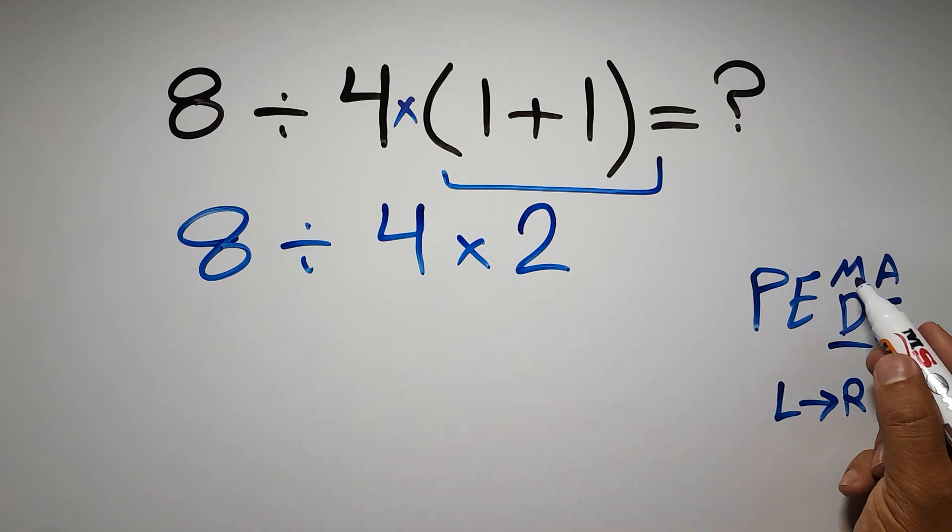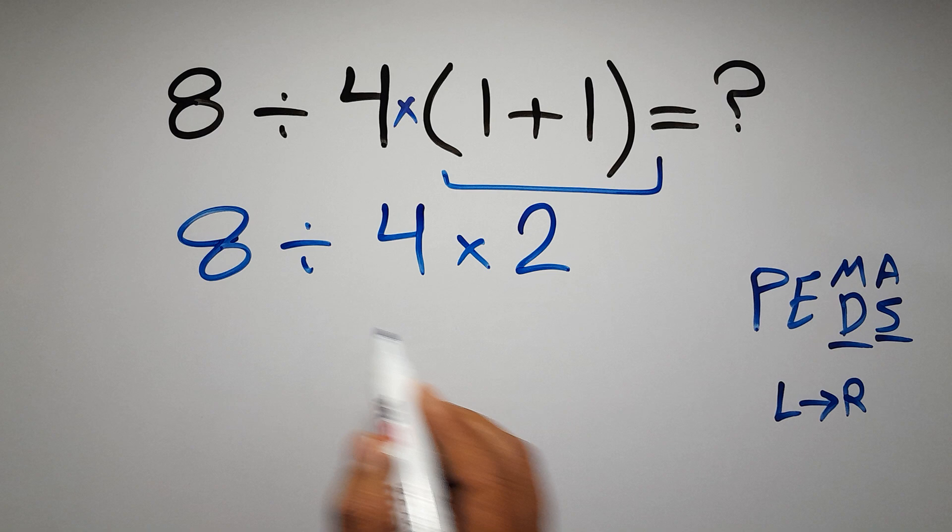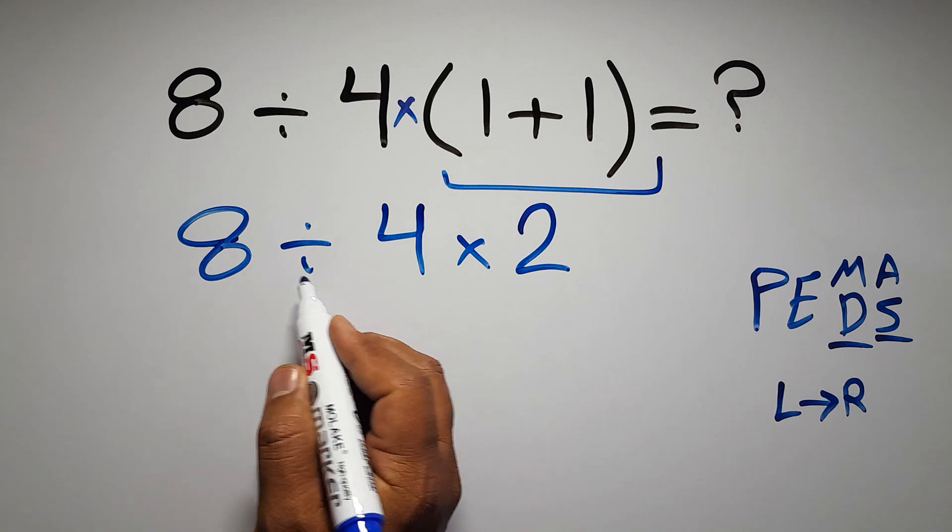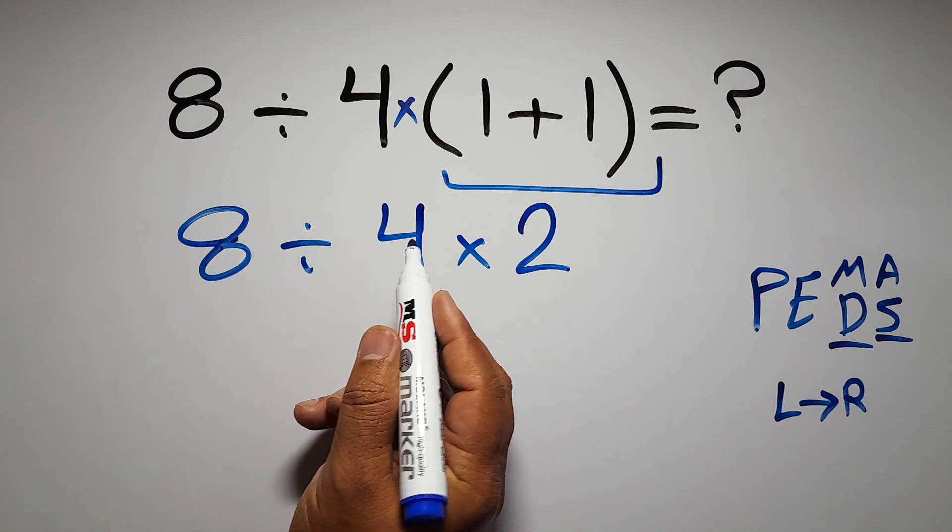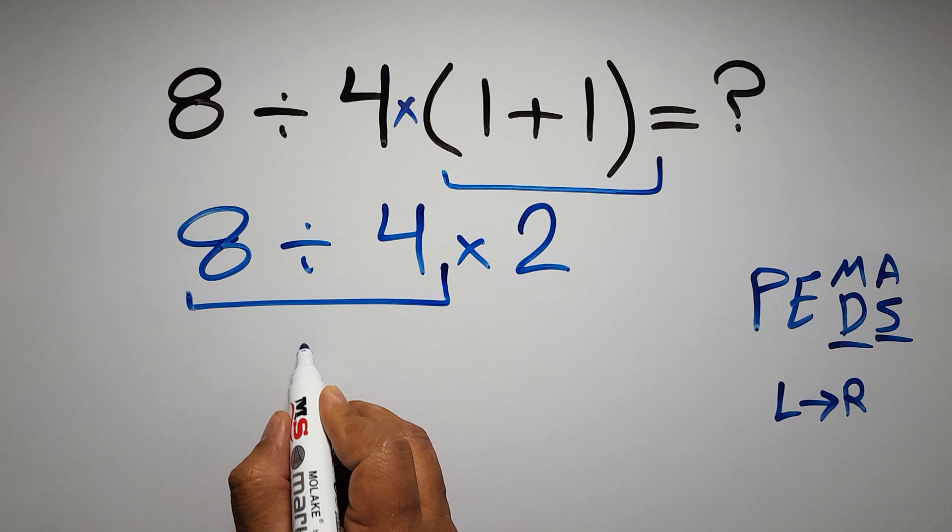As I said, multiplication and division have equal priority, and we have to work from left to right. So here first we have to do this division. 8 divided by 4 gives us 2.